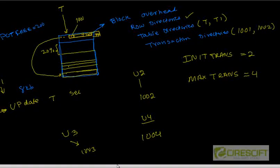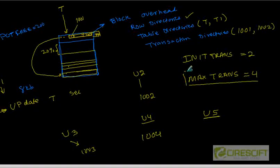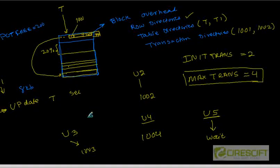So now all four transactions are happening right now — 1001 is in the first element, 1002 is the second element, and we have reached the maximum number of transactions. Let's say another user U5 is trying to update another row. He comes here but cannot get an additional slot in the transaction directory because our MAX_TRANS is 4. Therefore, this update is going to wait until any of user 1, 2, 3, or user 4 does a commit. Once one of them commits, user 5 can continue his transaction.